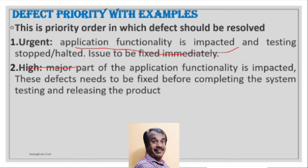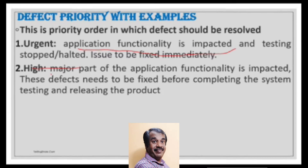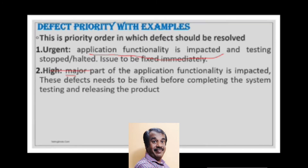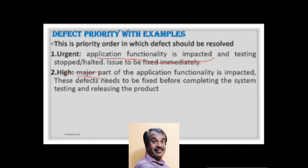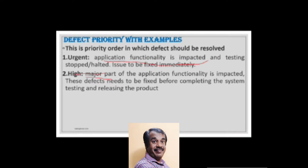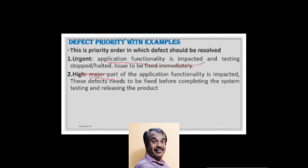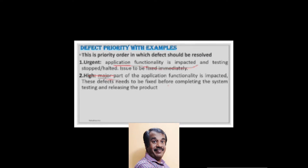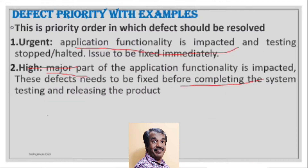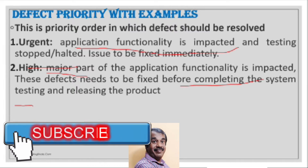The second priority level is High, where the major part of the application functionality is completely altered. These defects need to be fixed before releasing the system to the client or before final system testing, and are classified as High.